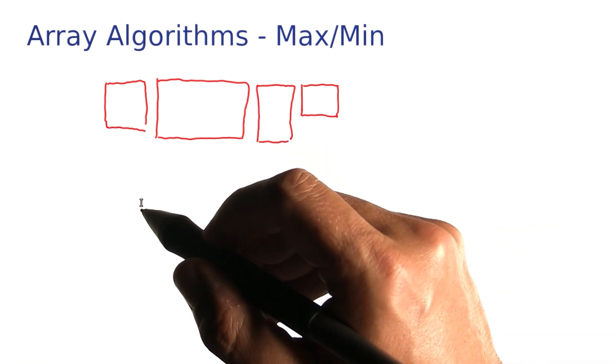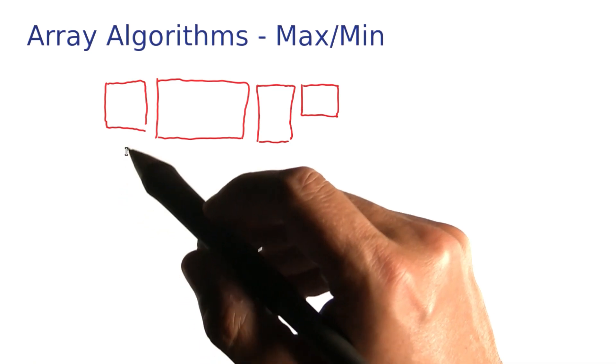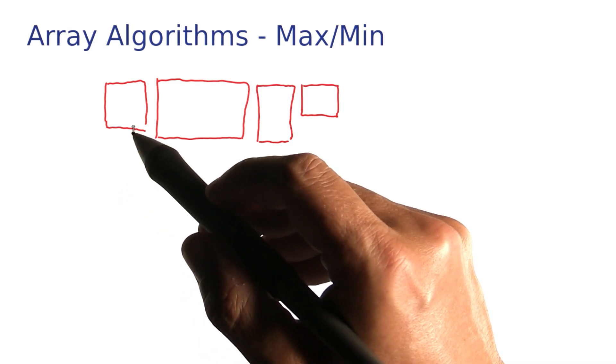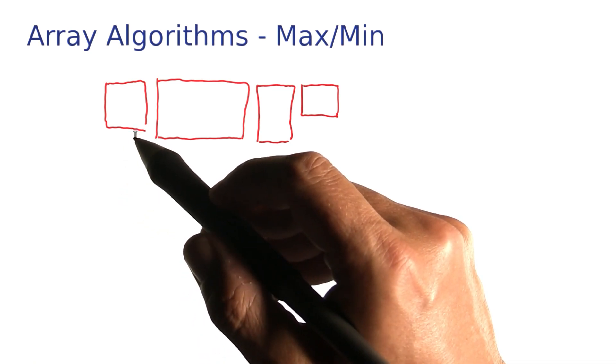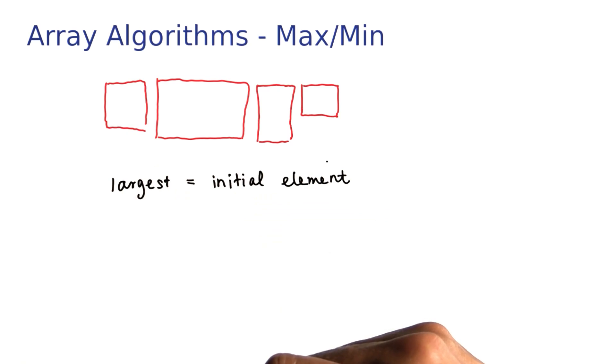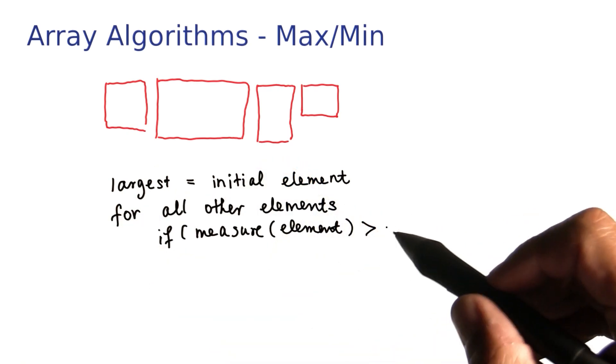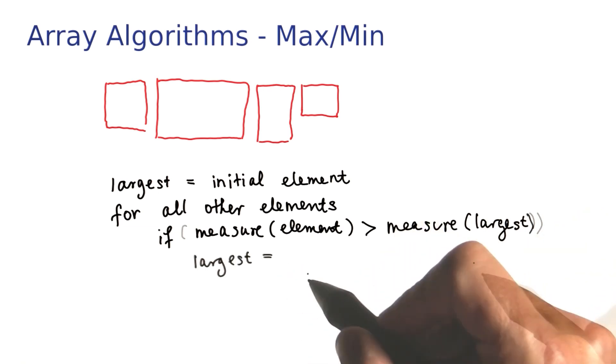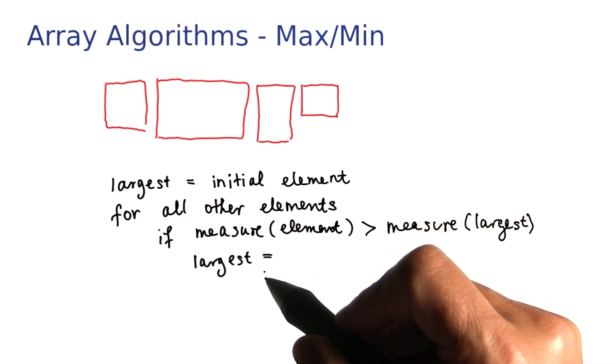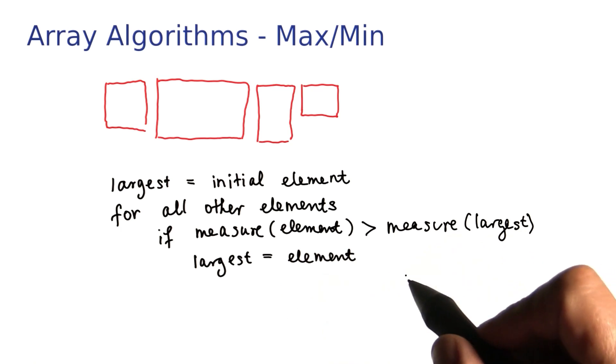In this algorithm, we start assuming that the first element, or rather the element at index 0, is the largest one. Then we look at all other elements, and if an element is larger, by some measure, than the largest element, then we change our mind, and now say the largest element is the one that we've just seen.